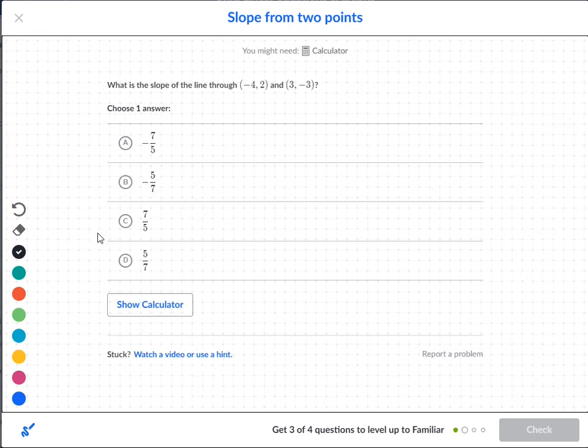Okay, next one. What's the slope of, they give me a negative four, two, and three, negative three. x1, y1, because that's the first point. x2, y2.